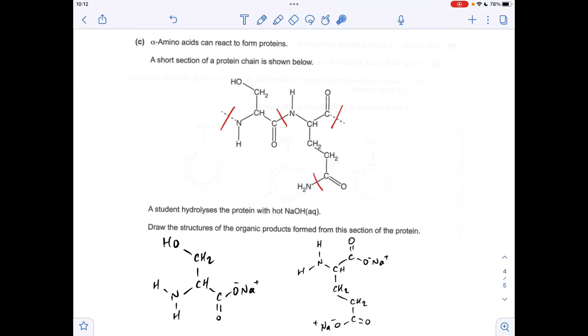And the other structure we need to draw is for this part here. So again, the NH becomes an NH2, the C=O becomes a C=O, single bond O, Na. Again, you don't have to show the charges, but I have. And then this is all the same, and then we get another one of these COO-Na groups here. And if you're interested, that NH2 is going to become NH3, an ammonia molecule, but it only asks for the organic products, so I haven't drawn that.